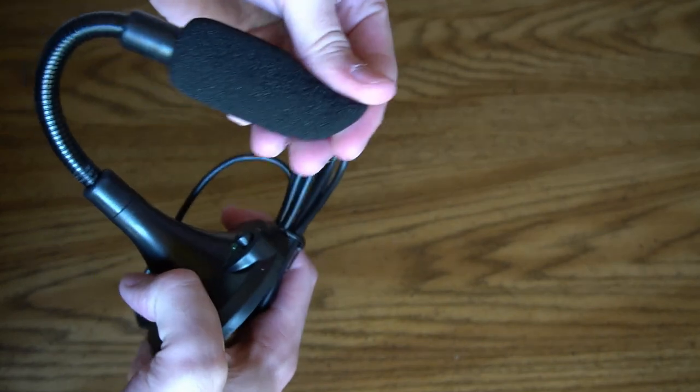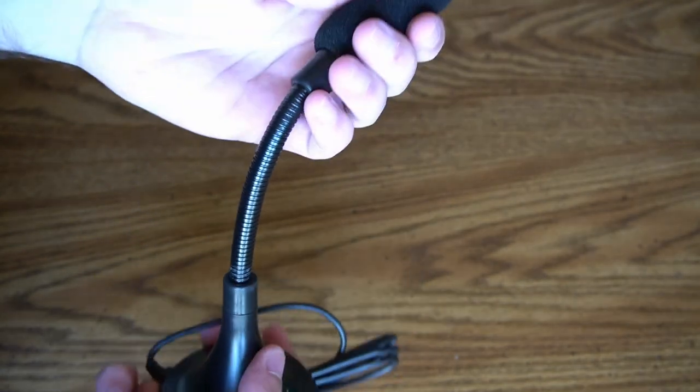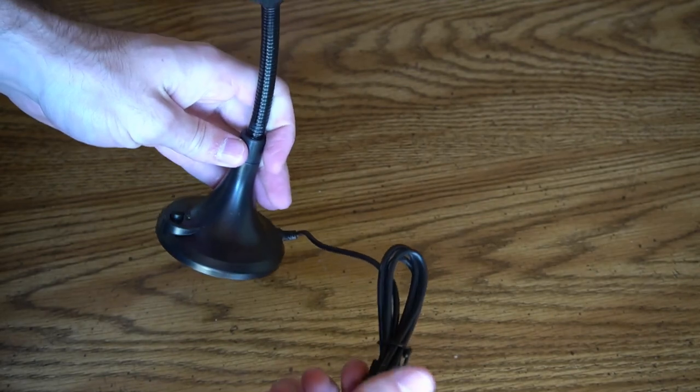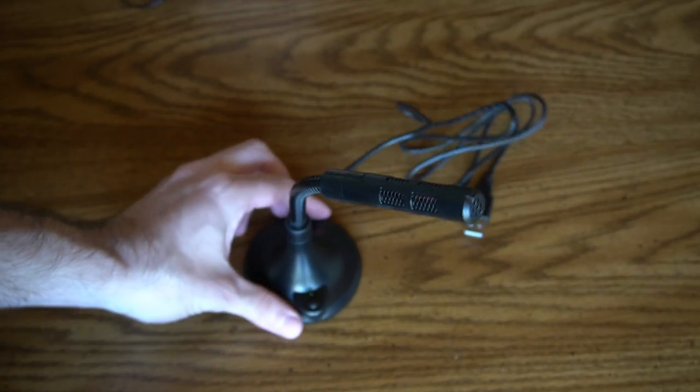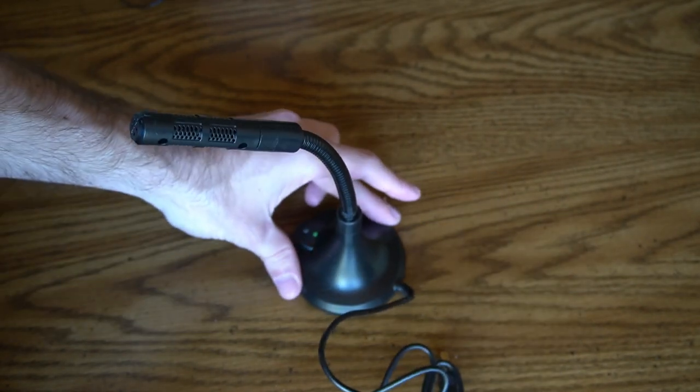So in the box, you will receive a small user manual and the microphone itself. As you can see, the neck of the microphone is very long and is completely flexible. And this is how the microphone looks without the foam top on it.